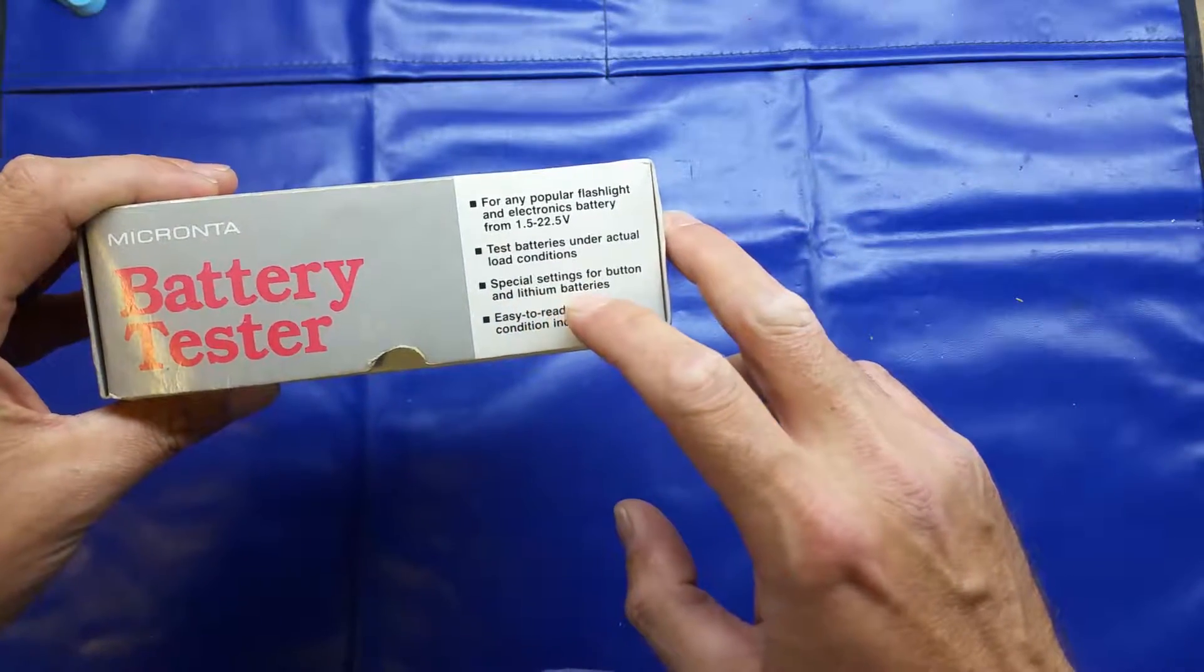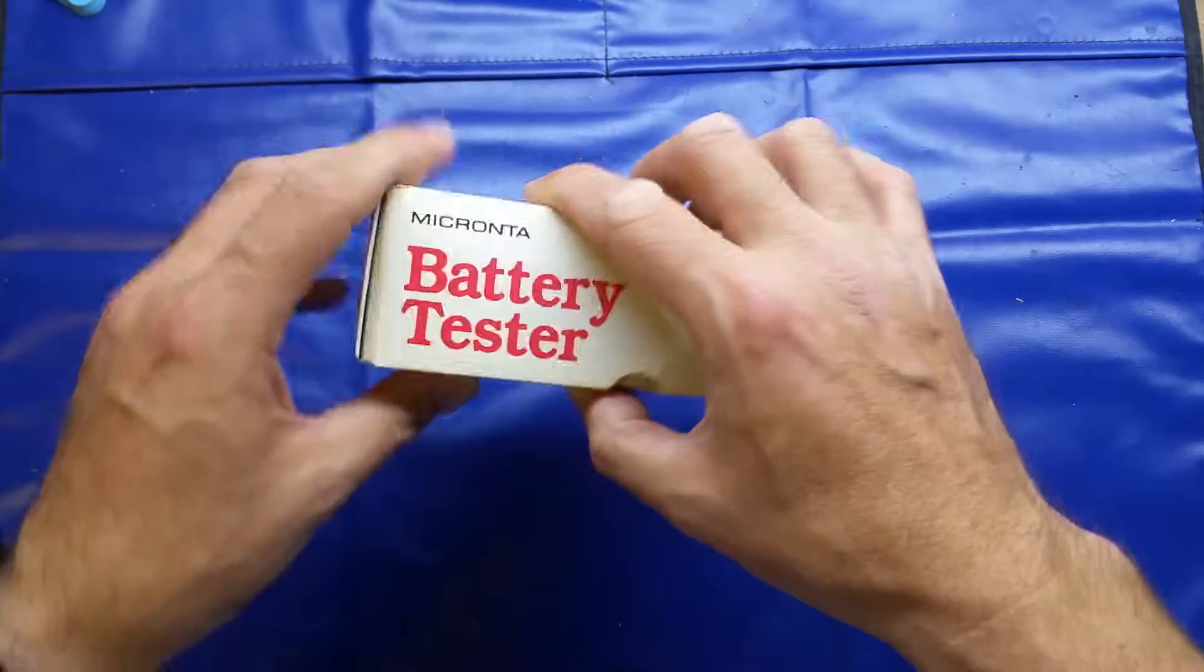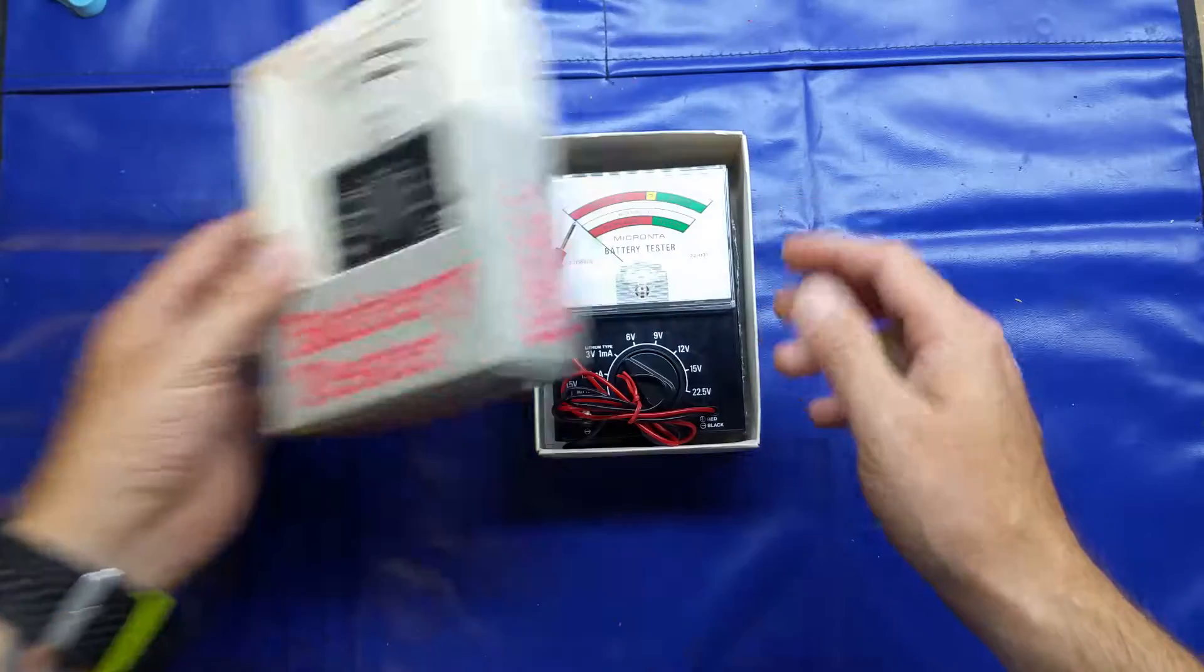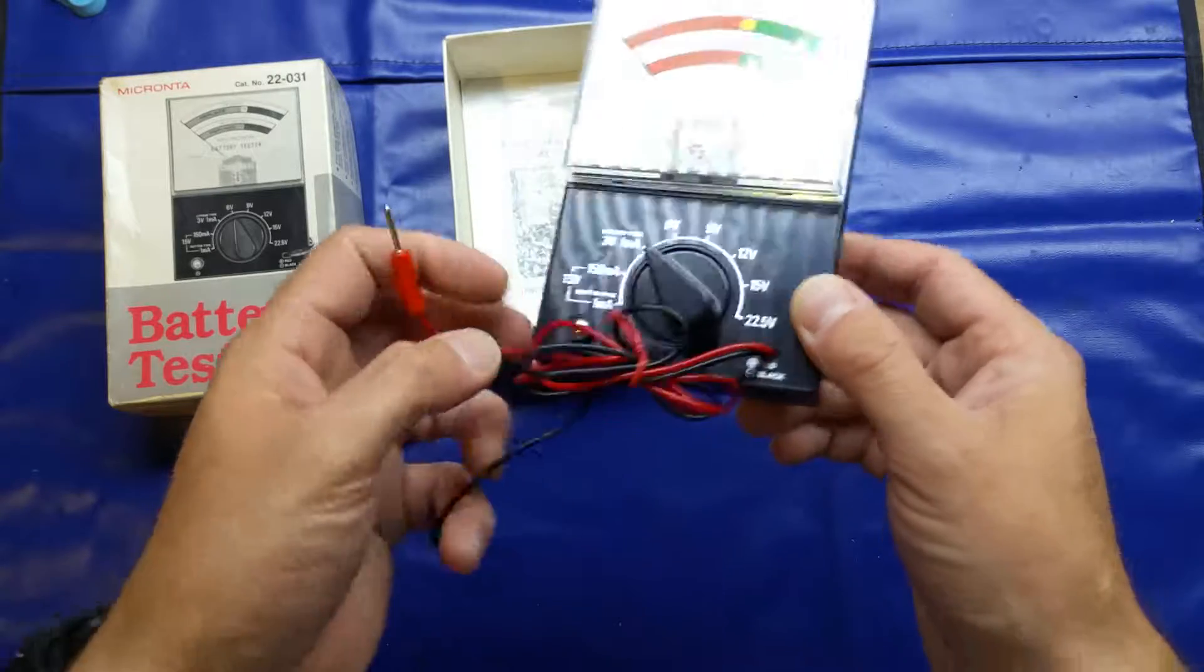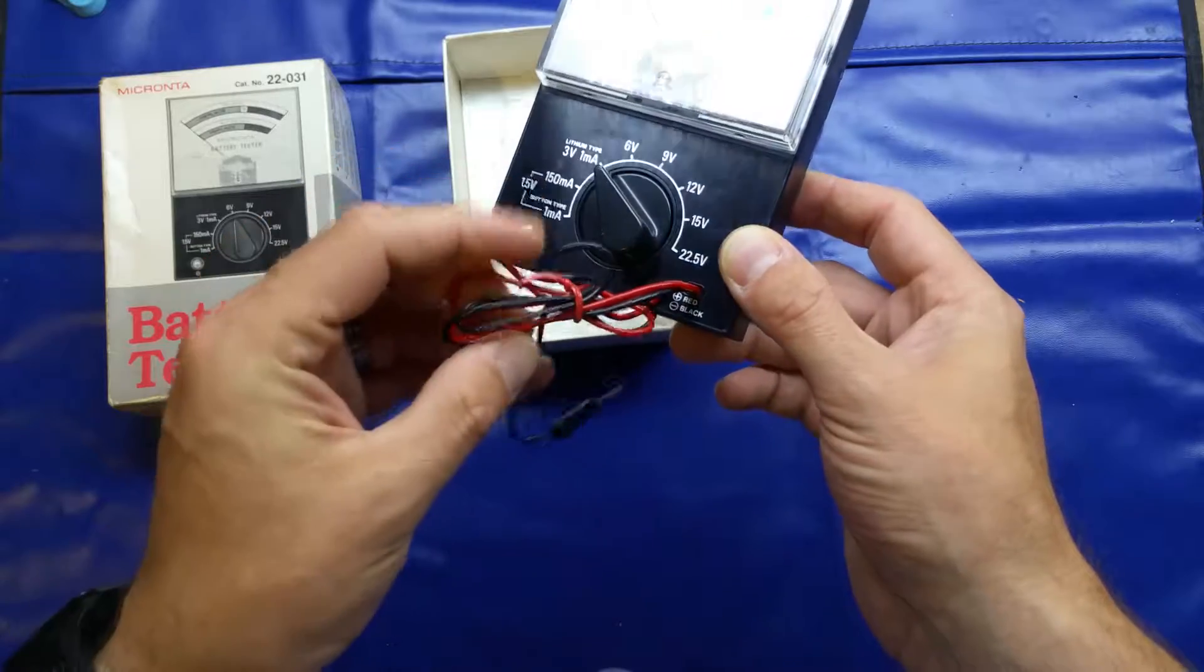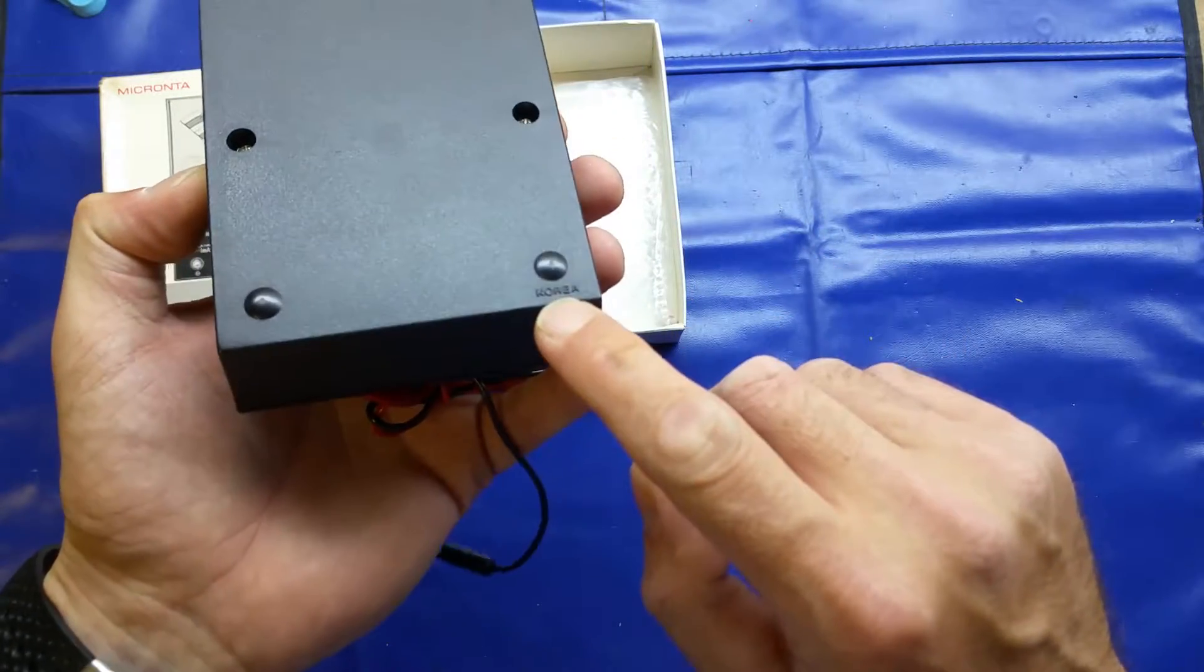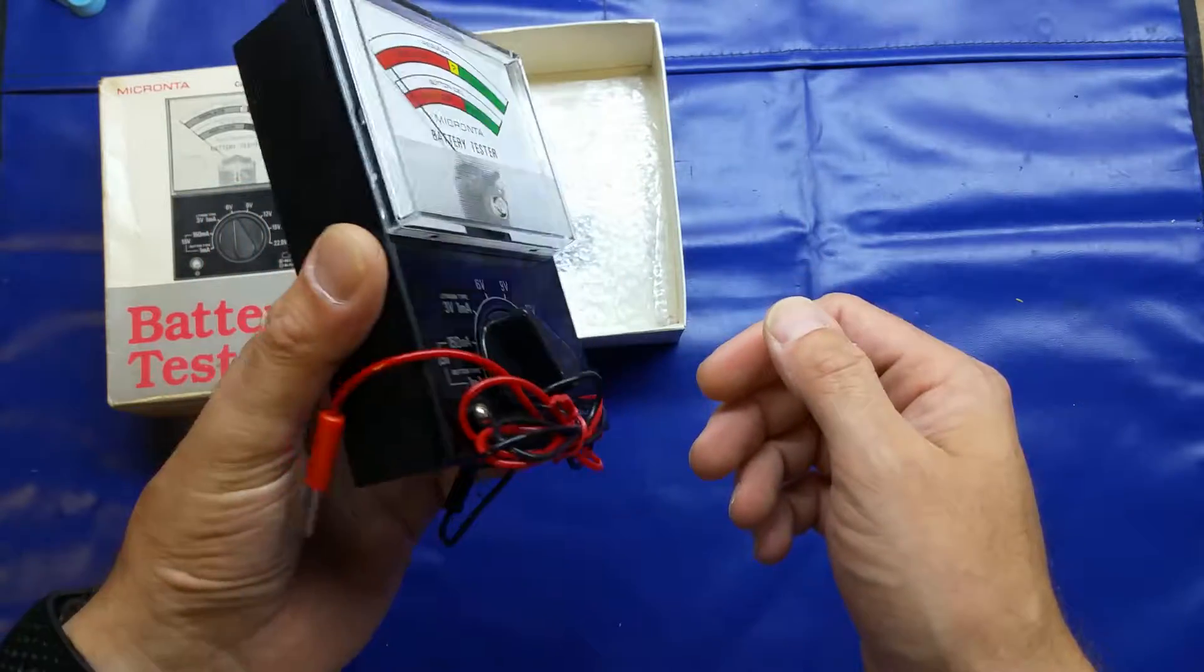But that's a kind of false reading because you might be inclined to think it's still a usable battery, but it's not because it's just purely measuring the voltage. So the difference between a battery tester and a multimeter is that the battery tester will actually place the battery under load and the meter will reference that to the load and give you a real sort of life indication. Looking around the box, it says for any popular flashlight and electronics battery from 1.2 to 22.5 volts.